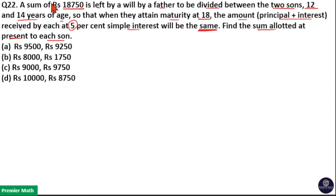Here, the sum 18,750 is divided between two sons of age 12 year and 14 year. When they attain the age of 18 year, they will get the same amount.